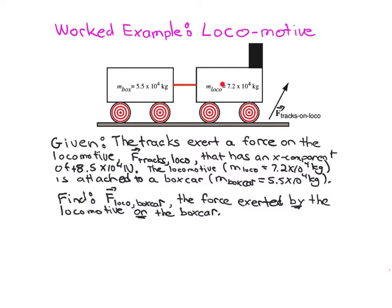We're going to focus on all the forces that act on the locomotive, and then later on we'll focus on the forces that act on the boxcar. One other important point before we get to drawing the free body diagrams: the boxcar is attached to the locomotive. There's going to be a net force acting on the locomotive, and the locomotive is going to pull the boxcar along. The boxcar moves along with the locomotive because of this attachment, and that tells us the accelerations of the locomotive and the boxcar are not independent — whatever the acceleration of the locomotive is, the boxcar has got to have the same acceleration.